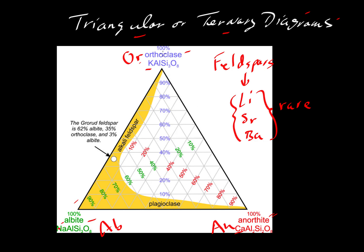The way this ternary diagram works is: stuff that is made of a hundred percent orthoclase plots at that apex, stuff that is a hundred percent anorthite plots there, and stuff that is a hundred percent albite plots there. It is very rare — you'd never find a hundred percent pure albite in nature, as there's always a little bit of potassium or calcium around. If we have a solid solution, we can contour this diagram, as Dexter Perkins has done. Here is the hundred percent line, then a ninety percent contour for orthoclase, then eighty percent, going all the way down.